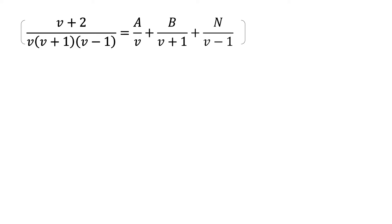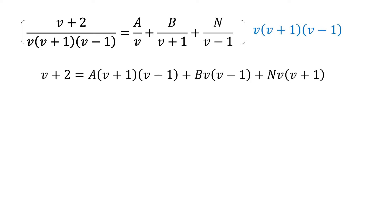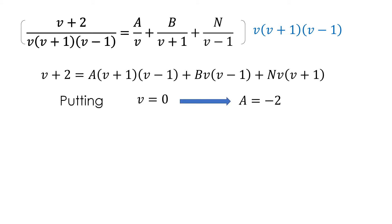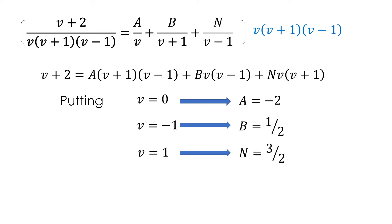Multiplying through by the least common denominator to clear fractions gives: v + 2 = A(v + 1)(v − 1) + Bv(v − 1) + Nv(v + 1). Setting v = 0 gives A = −2. Setting v = −1 gives B = 1/2. Setting v = 1 gives N = 3/2.